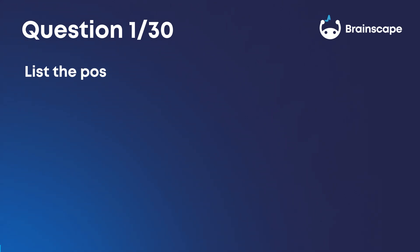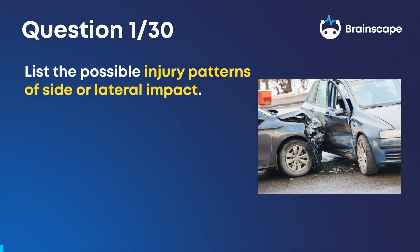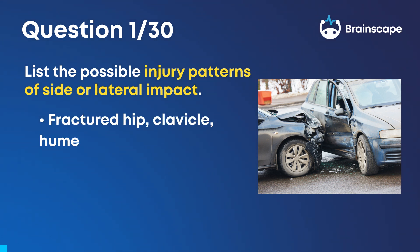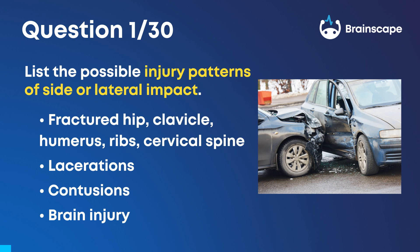Question 1. List the possible injury patterns of side or lateral impact. Fractured hip, clavicle, humerus, ribs, cervical spine, lacerations, contusions, and brain injury.